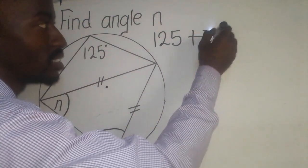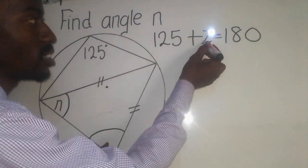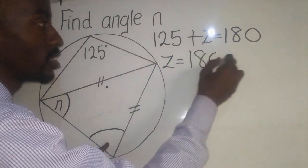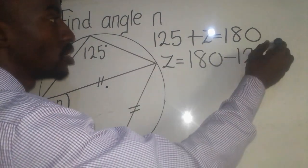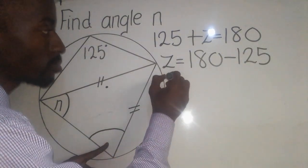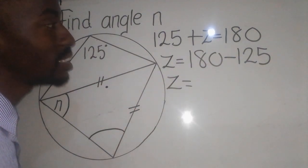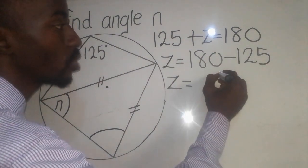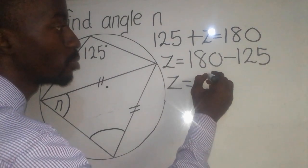So this z will come down equal to 180. When 125 comes this side it will be minus 125. So we say z equals 180 minus 125, which is going to give me 55.